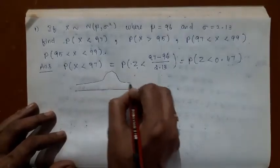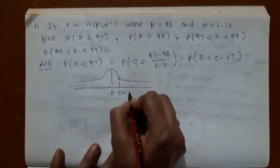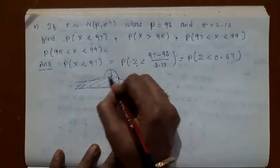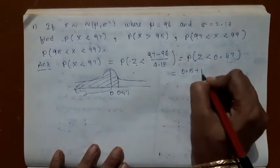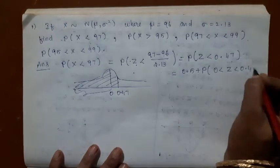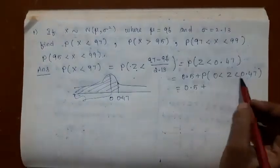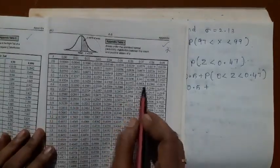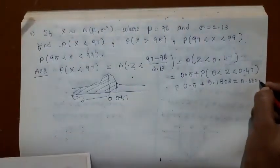Now draw the curve. When the question has been converted in terms of Z, draw the curve. 0.47 will be to the right of center. You want the area less than 0.47, which is this full left area. You know the area up to 0 is 0.5, but the area from 0 to 0.47 you look up in the table: for 0.47, the table gives 0.1808. So the answer is 0.5 plus 0.1808 equals 0.6808.